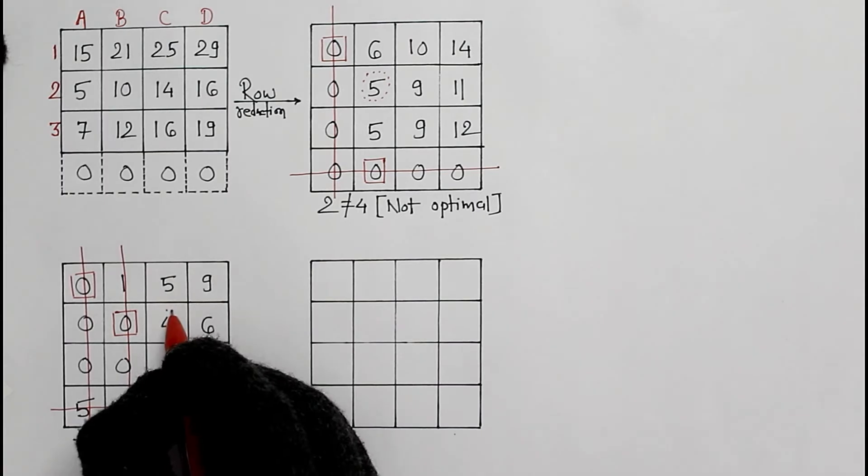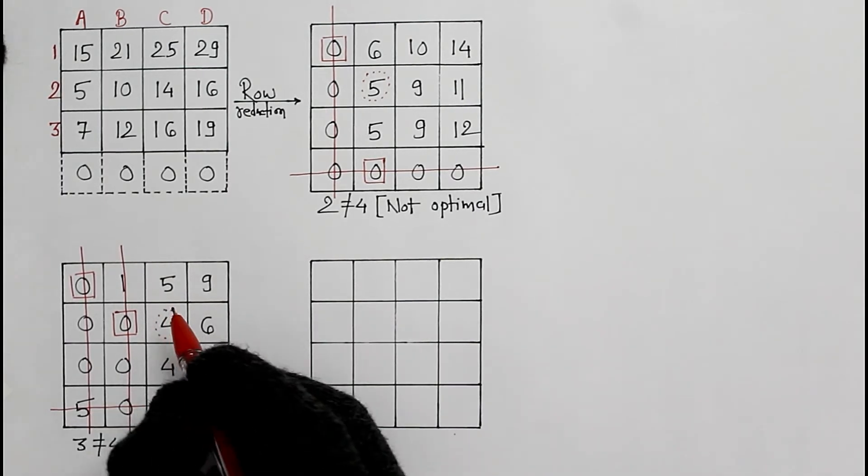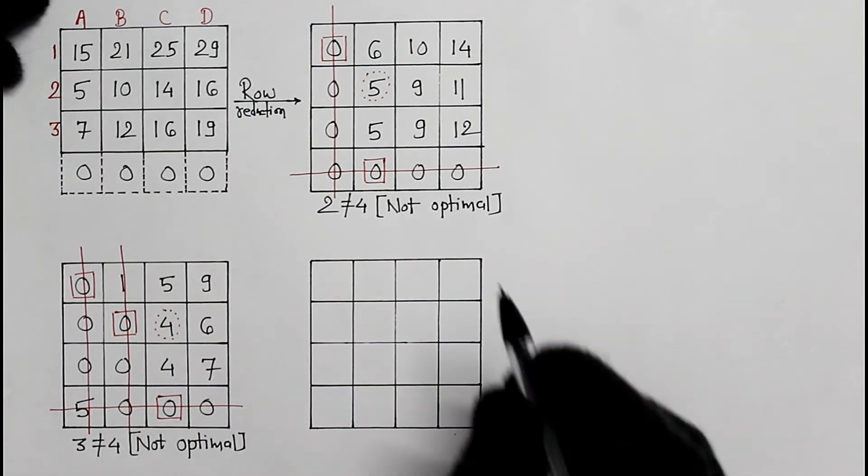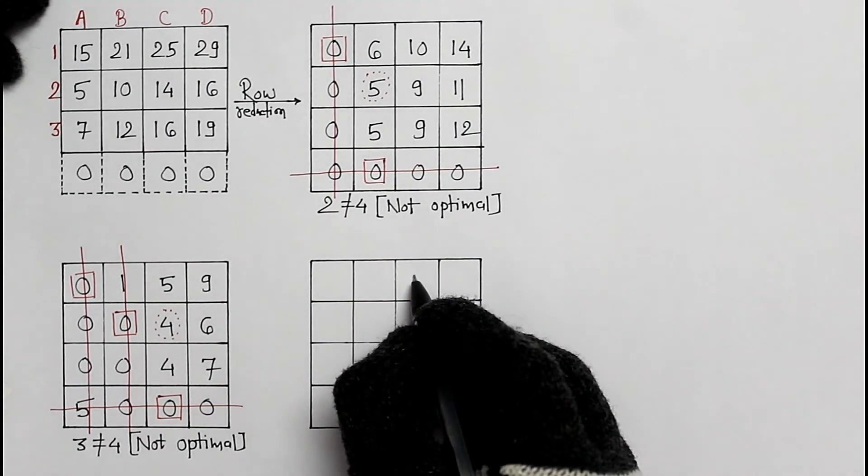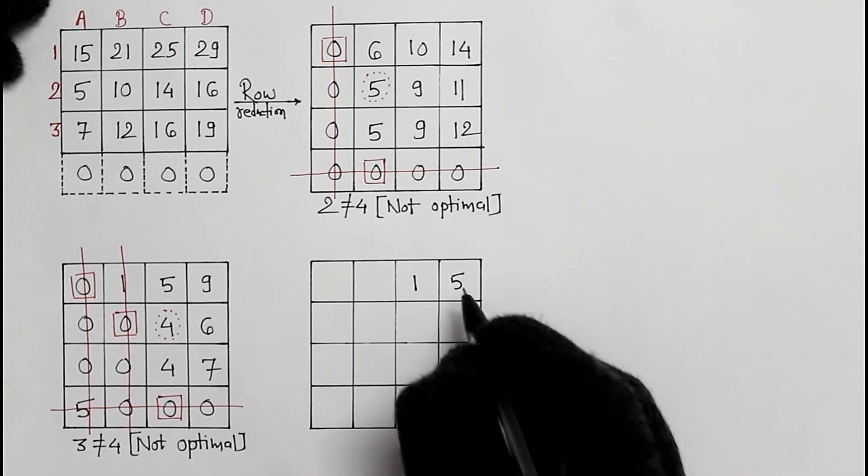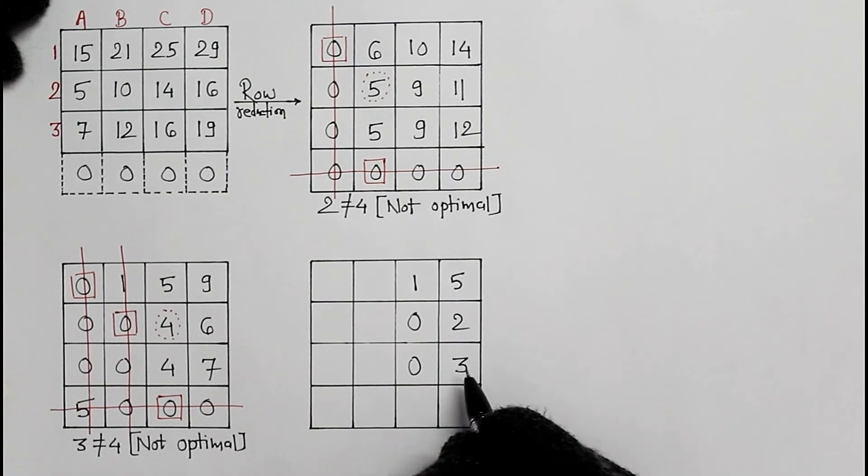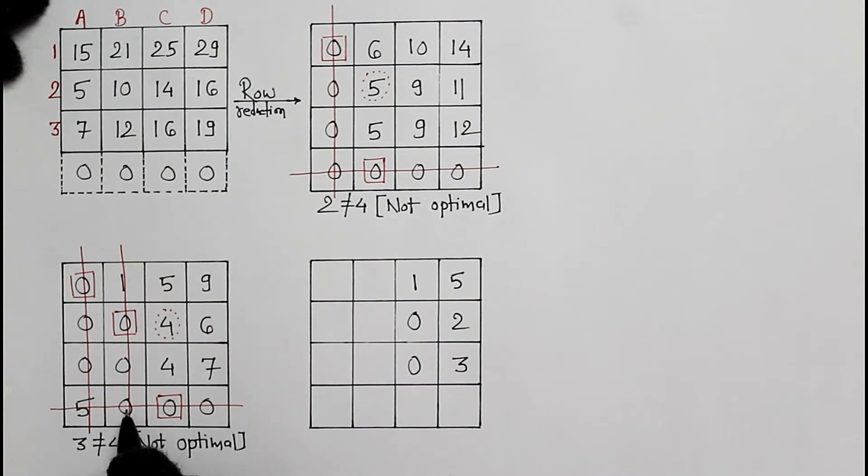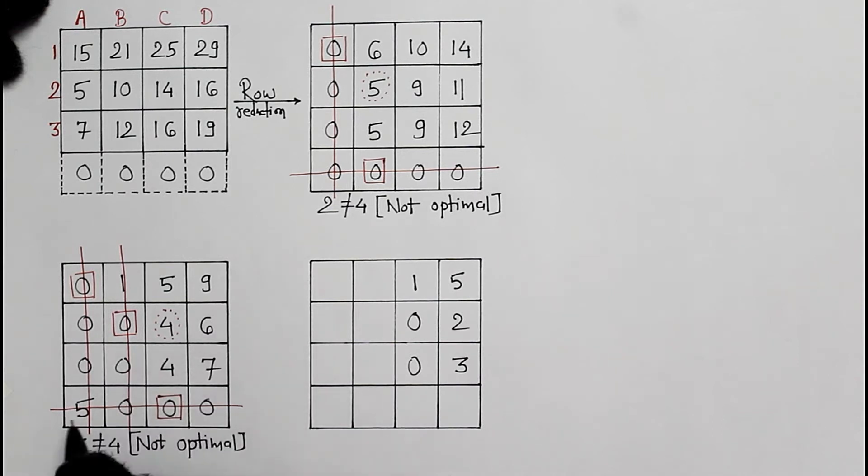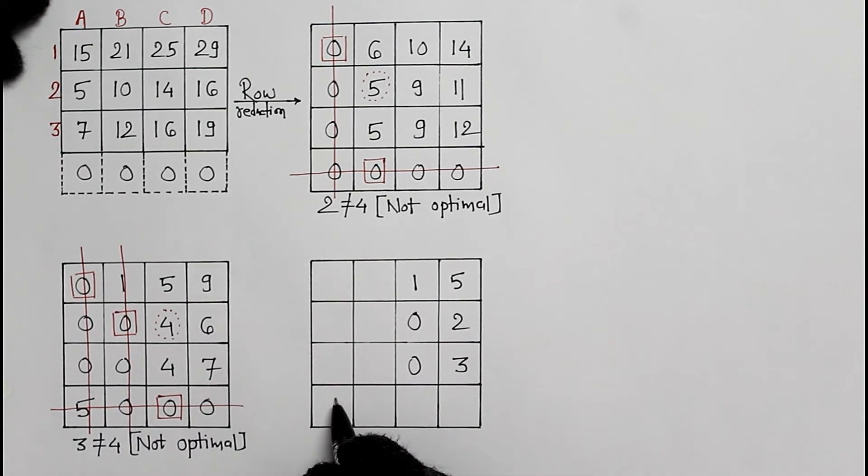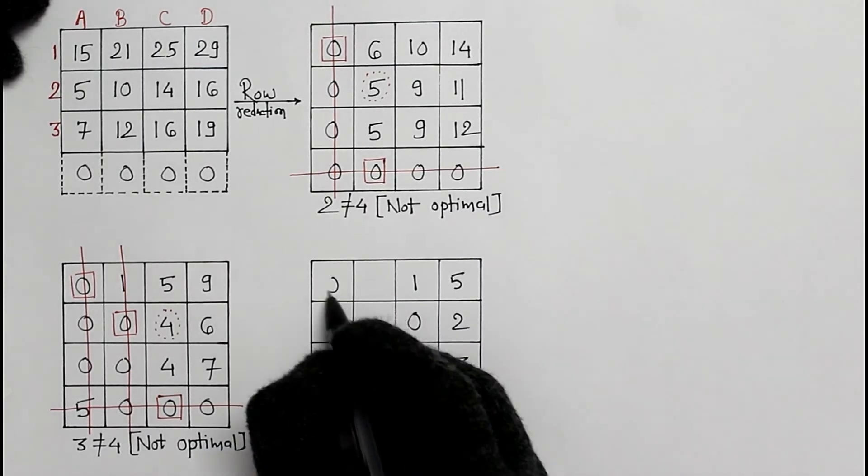4 is the minimum uncovered element: 1, 5, 0, 2, 0, 3. We have two intersection points, and by adding 4 here and here, 9 and 4. Copy the other elements.